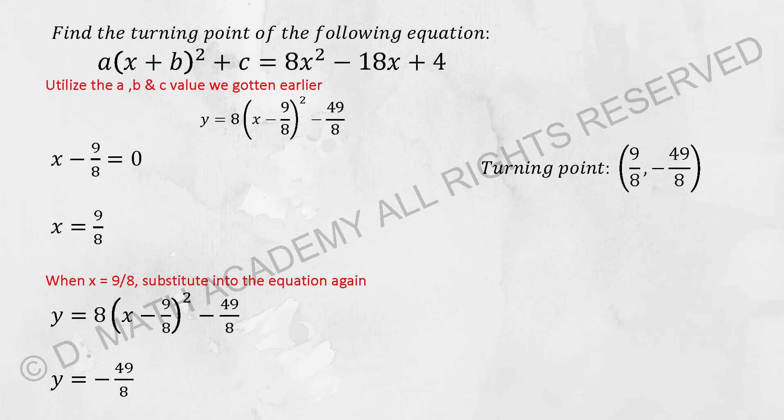So the same thing, focus on the bracket that you have there to find the x coordinate for the turning point. Your x would actually be 9/8, so when your x is 9/8, after the substitution, you will get your y as -49/8. So your turning point will be (9/8, -49/8). So that will be it for this particular topic.